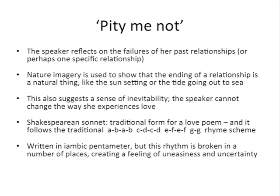It's a Shakespearean sonnet, which is a traditional form for a love poem. It contains themes of both love and death, which are both often found in sonnets, and it follows the traditional pattern of a Shakespearean sonnet — so it has three quatrains and a final rhyming couplet, which go A, B, A, B, C, D, C, D, E, F, E, F, G, G. So there is that sense of a cycle or a rhythm, a sense of order and routine, which ties in with what she's saying about the natural world and how it follows this pattern.